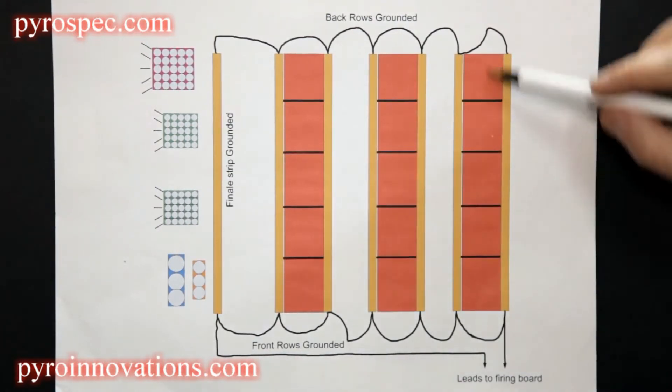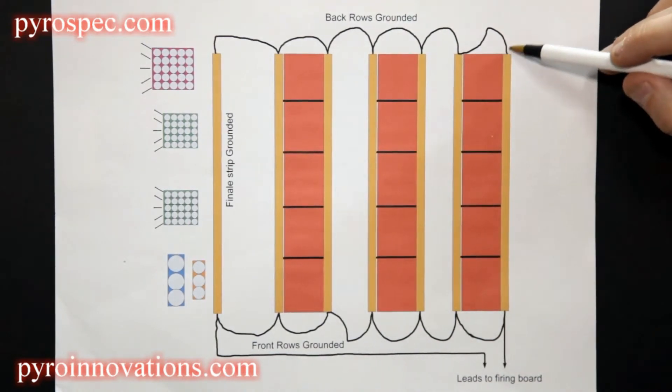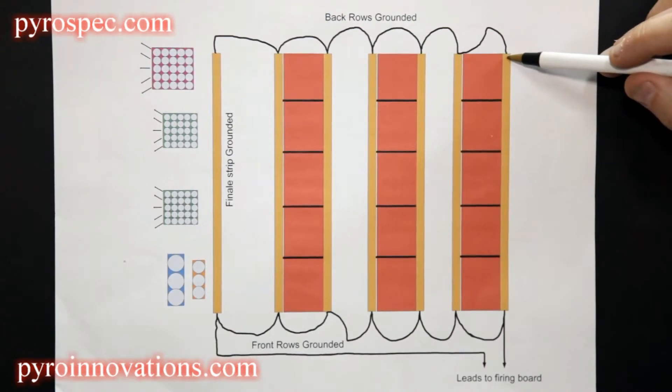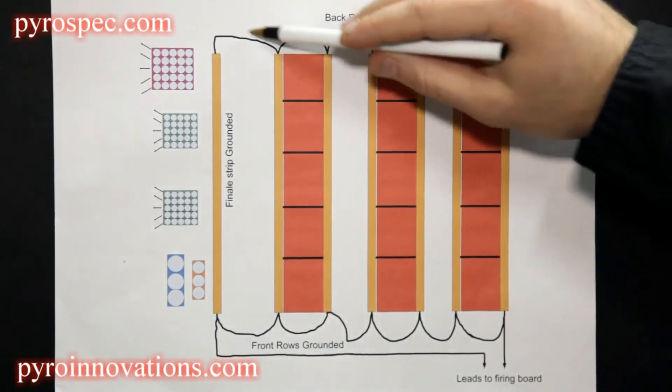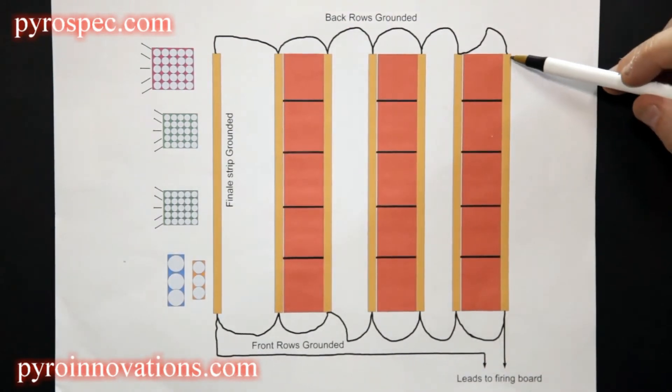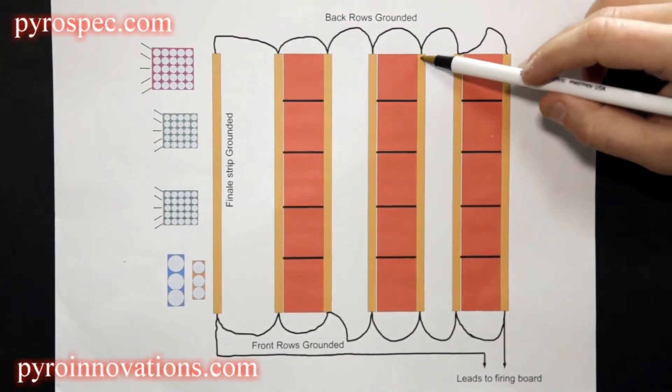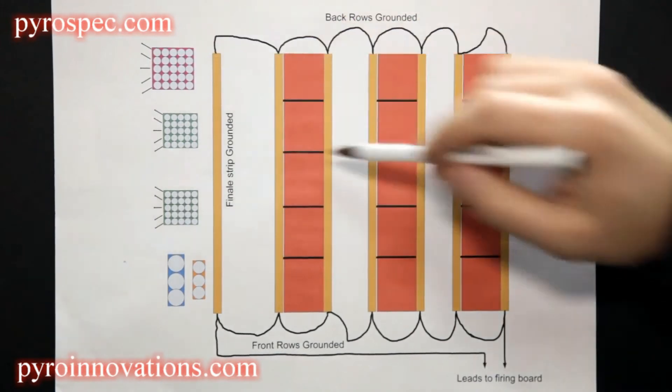To avoid that situation, we run an additional ground from each of the rear grounding terminals on every strip. So as you can see here, strip one, strip two, strip three, and so on.